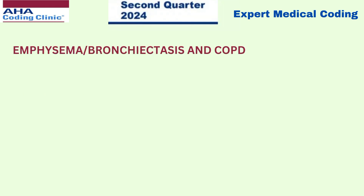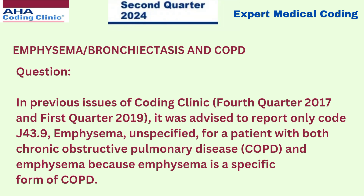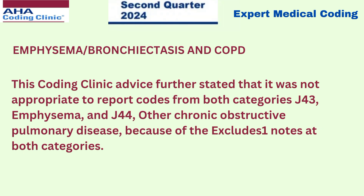Moving to the next coding clinic: emphysema, bronchiectasis and COPD. In previous issues of Coding Clinic — fourth quarter 2017 and first quarter 2019 — it was advised to report only code J43.9 (emphysema unspecified) for a patient with both COPD and emphysema, because emphysema is a specific form of COPD. That guidance further stated it was not appropriate to report codes from both categories J43 (emphysema) and J44 (other chronic obstructive pulmonary disease) because of the excludes one notes at both categories.